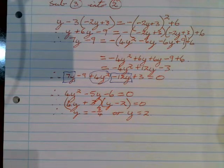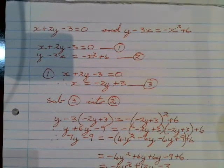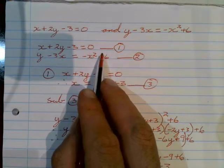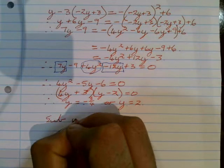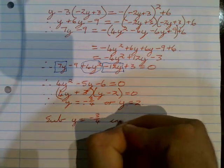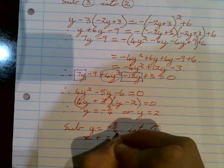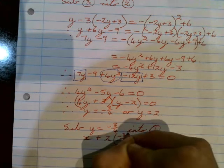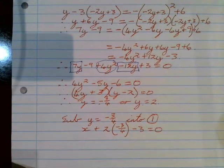Those are the two solutions for y, but we still have to find the values for x. We take each of the two y values and substitute them back into the easiest equation — equation number one, which we decided earlier was the easiest. So we substitute y equals minus 3 over 4 into equation number one. Equation number one was x plus 2y minus 3 equals zero, so we replace y with minus 3 over 4.